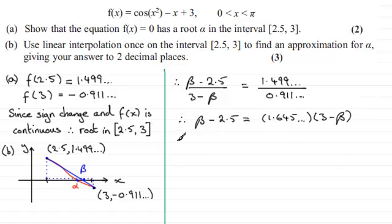And if I expand the bracket, we've got 1.645 multiplied by the 3 gives me 4.935 and so on, and then we end up with minus 1.645 and so on multiplied with the β.